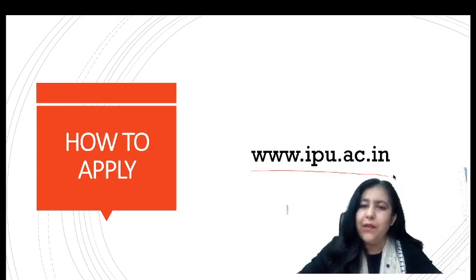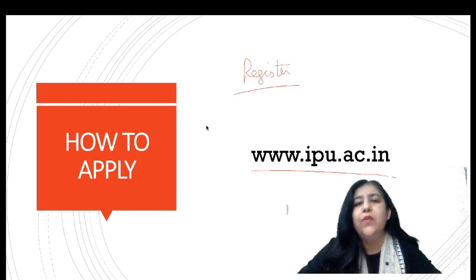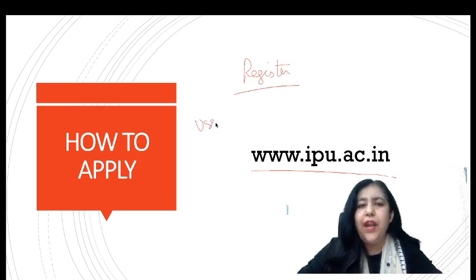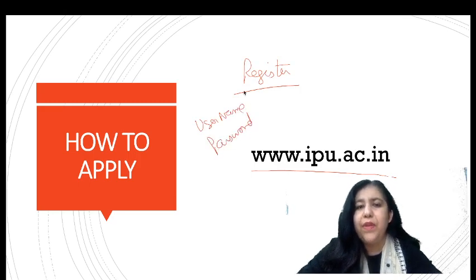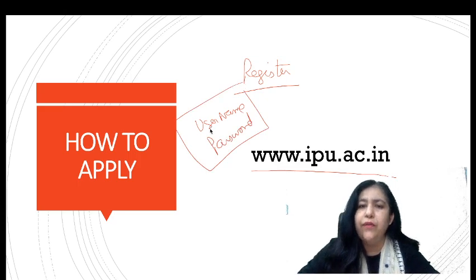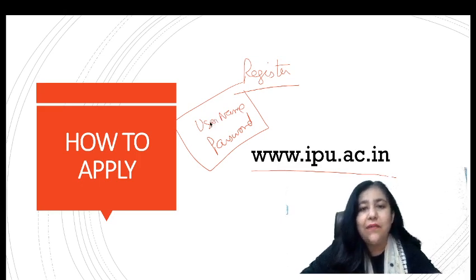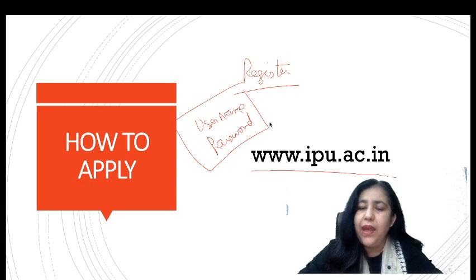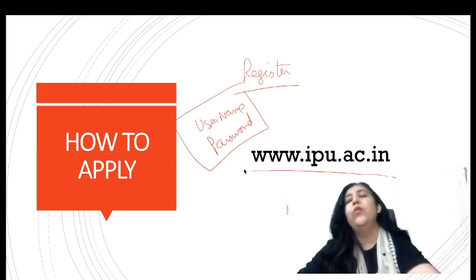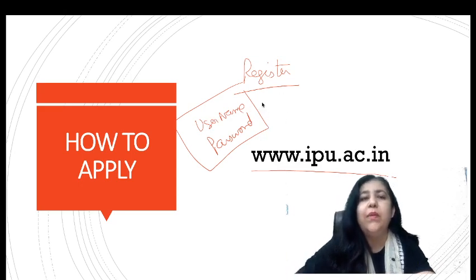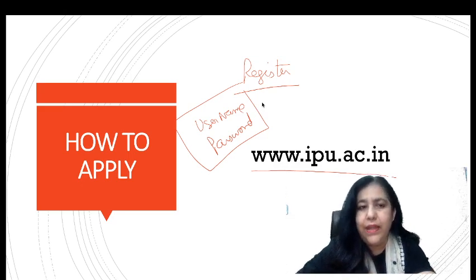What you have to do right now is register. After registering you will get a username and password. Log in with those credentials and fill in your registration form with all your data including your photograph, thumb impression, and everything else. Submit the form. Even if you don't have your class 12 result yet, there is no problem — you will be able to edit the form again once your result comes.